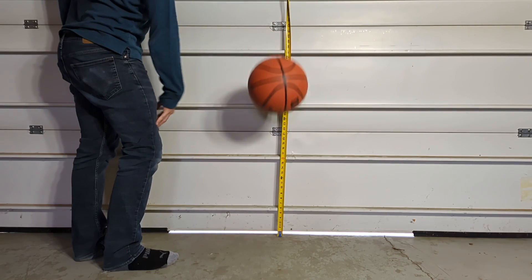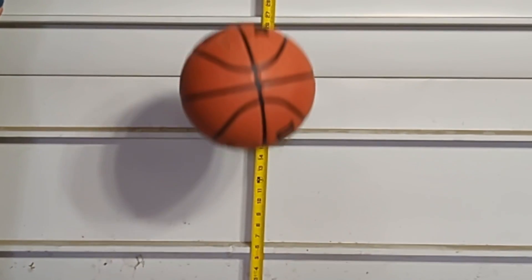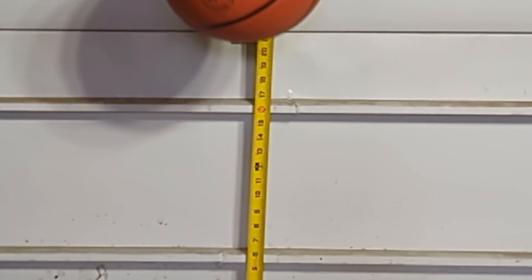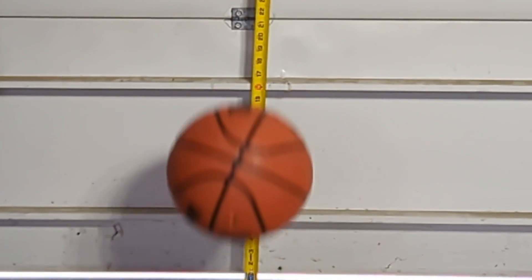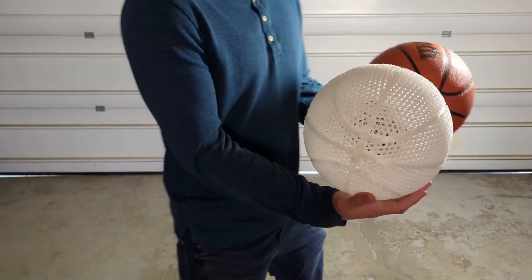The first measurement for the regular basketball, it was just below 22 inches. The second measurement was also right below 22 inches, and the third measurement was right above 22 inches.